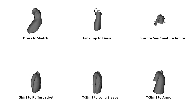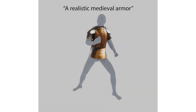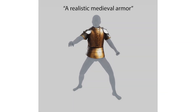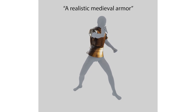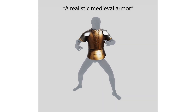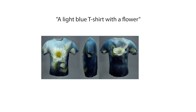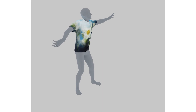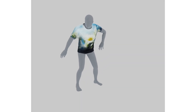Given the text prompt 'a realistic medieval armor', we generate the following mesh, which we then simulate using our real-time simulator. Given the text prompt 'a light blue t-shirt with a flower', we generate the following mesh and again create novel simulations.